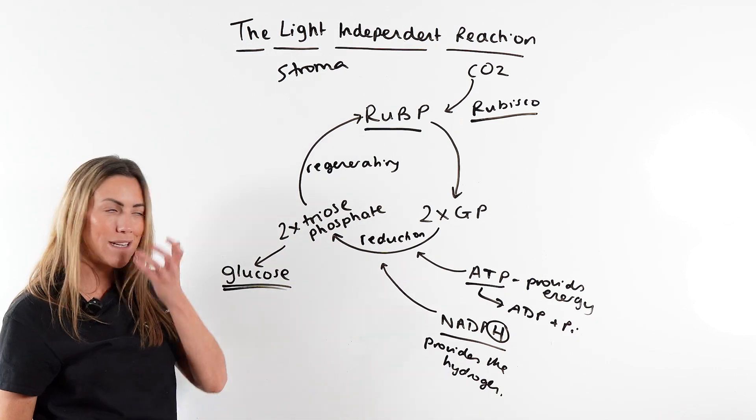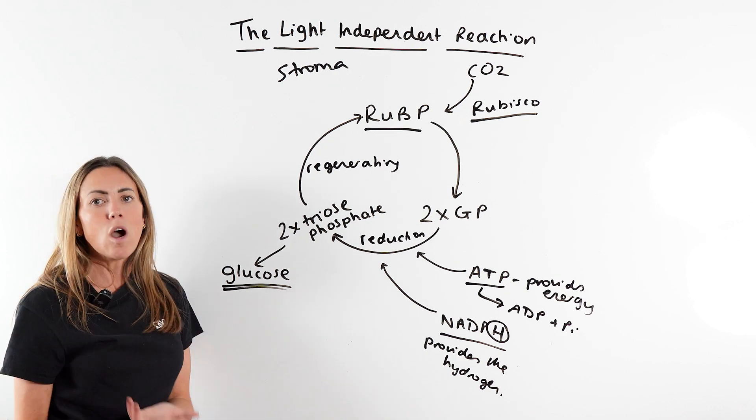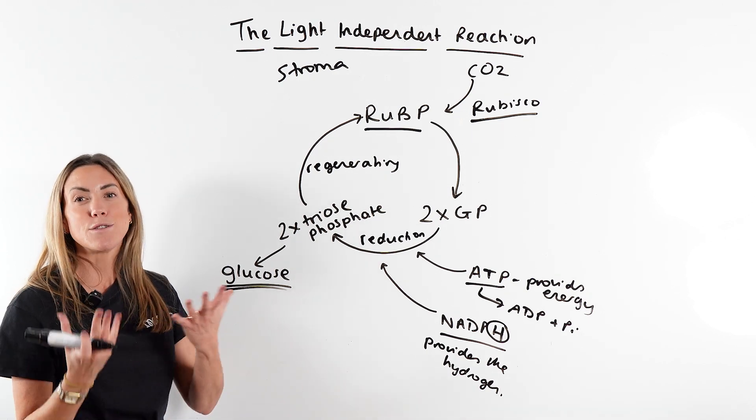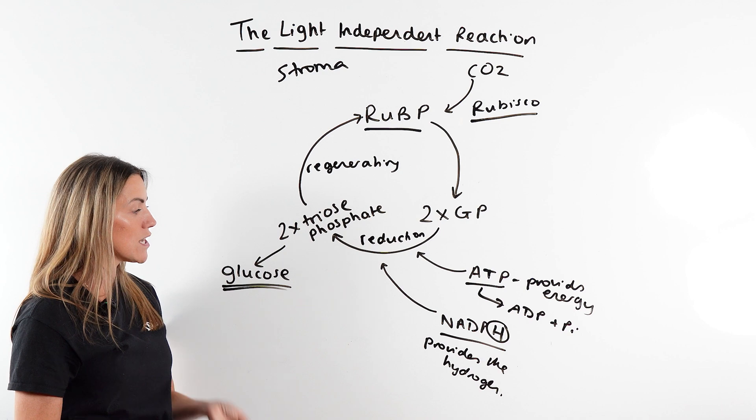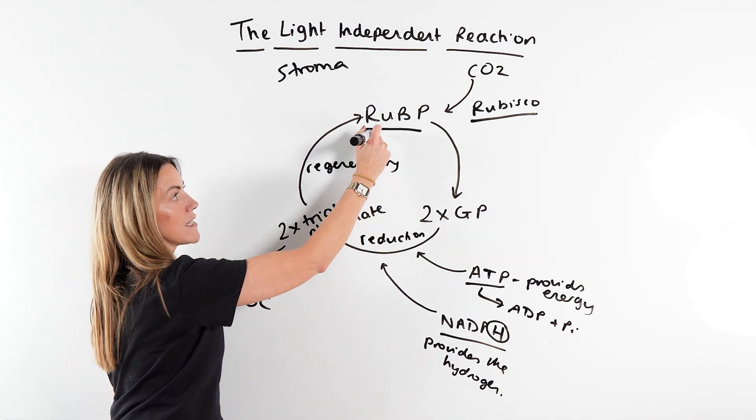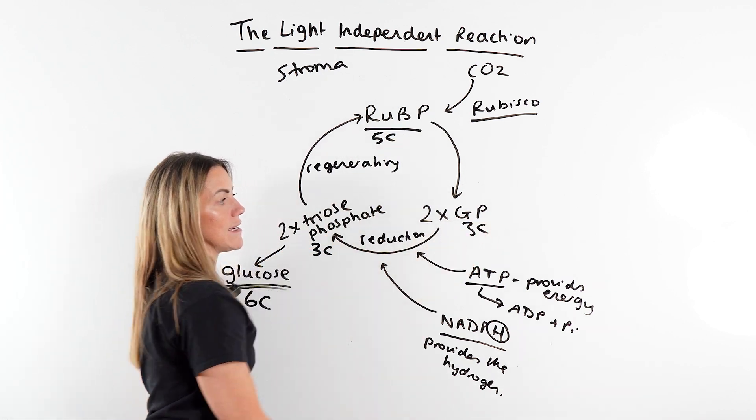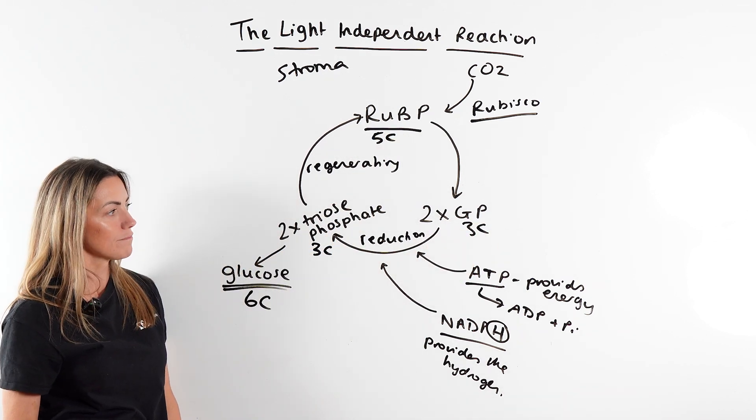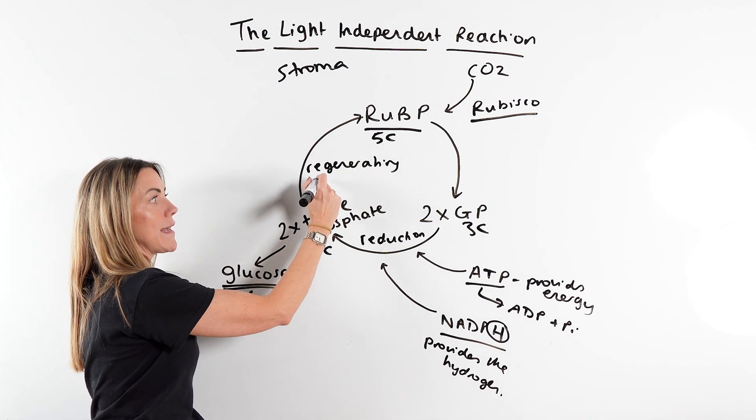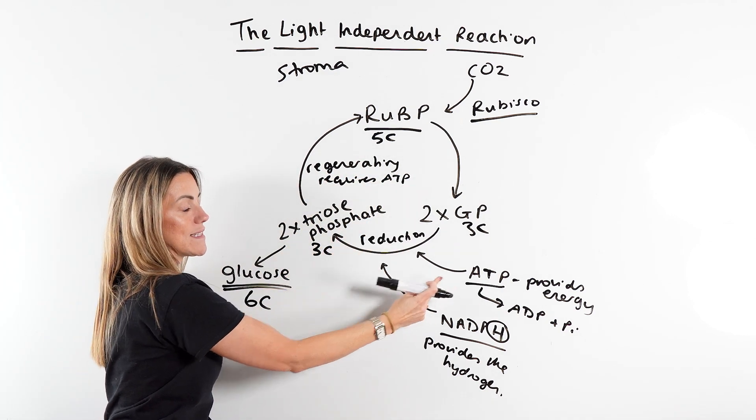Now you don't have to remember these numbers, but they could give you information in the exam about carbon numbers, for example, and ask you to work that kind of thing out. So just remember that glucose has six carbons. Each triose phosphate has three carbons and RuBP has five carbons. Obviously GP is also three carbons. Now regenerating RuBP also requires ATP as well as this step here.